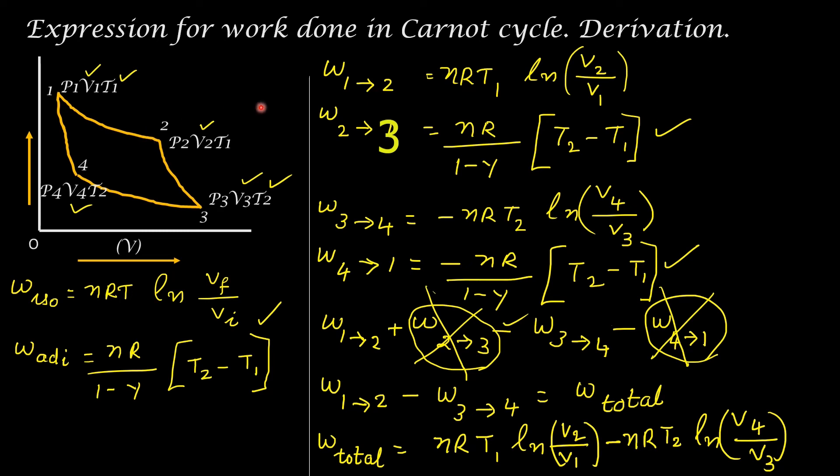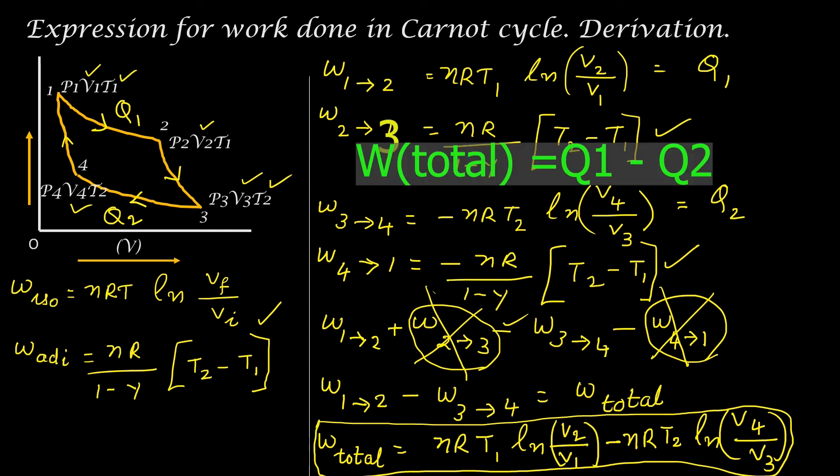During the first step, that is work done from 1 to 2, the quantity of heat absorbed is equal to Q1. So work done for isothermal process here is equal to Q1. And for work done from 3 to 4, that is isothermal compression work, that is this portion of the graph, quantity of heat exchanged is equal to Q2. We will need this when we discuss efficiency. So total work done can be calculated by this formula and it is equal to Q1 minus Q2. The difference in the work done for these two processes is the total work done.